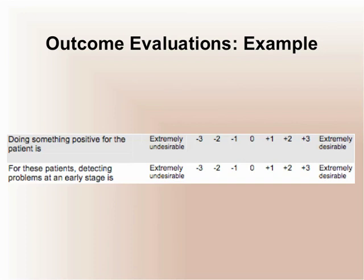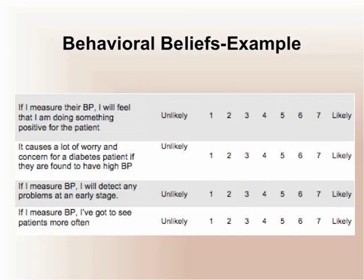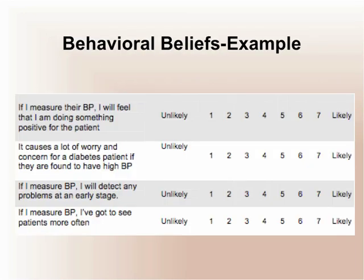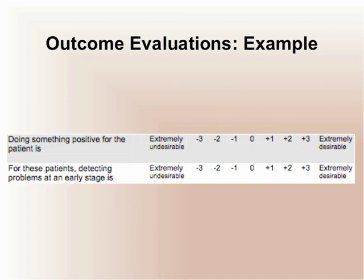Here are examples again from the perspective of the provider: doing something positive for the patient is rated from extremely undesirable to extremely desirable; detecting problems at an early stage is extremely undesirable to extremely desirable. These two constructs interact and work together. If by measuring blood pressure I will detect any problems at an early stage — doing something positive for the patient — and that is extremely desirable, then as a primary care physician I would be likely to engage in that behavior.